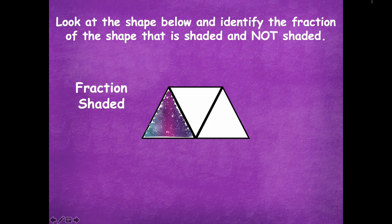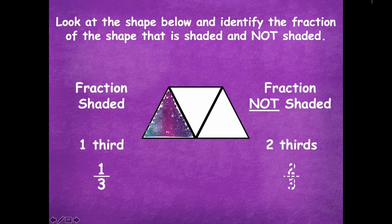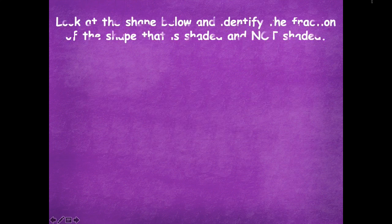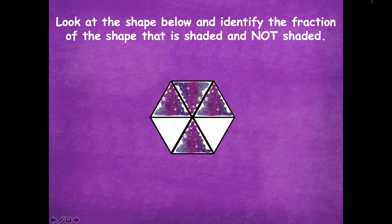The fraction that is shaded is one-third. The part that is not shaded is one-third and two-thirds. That's how you would write it in the different forms.